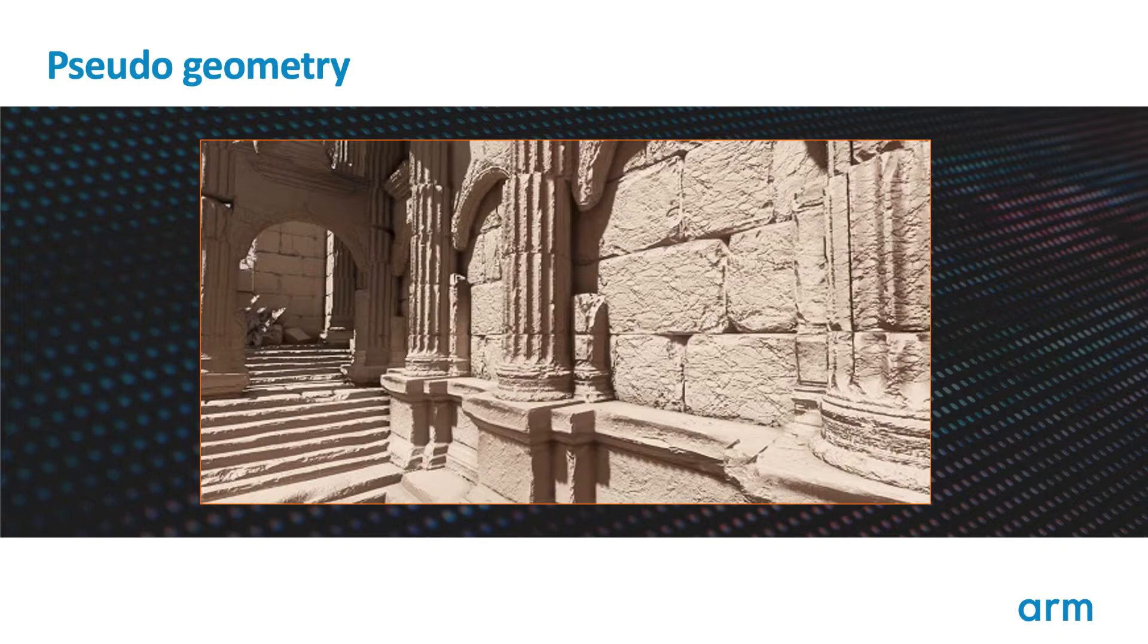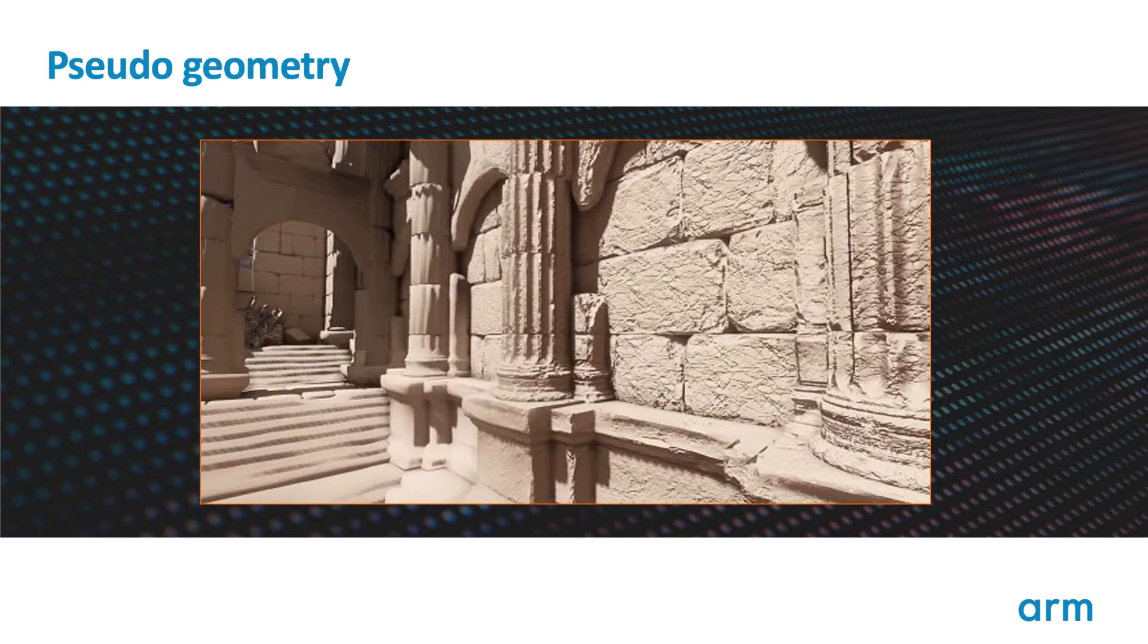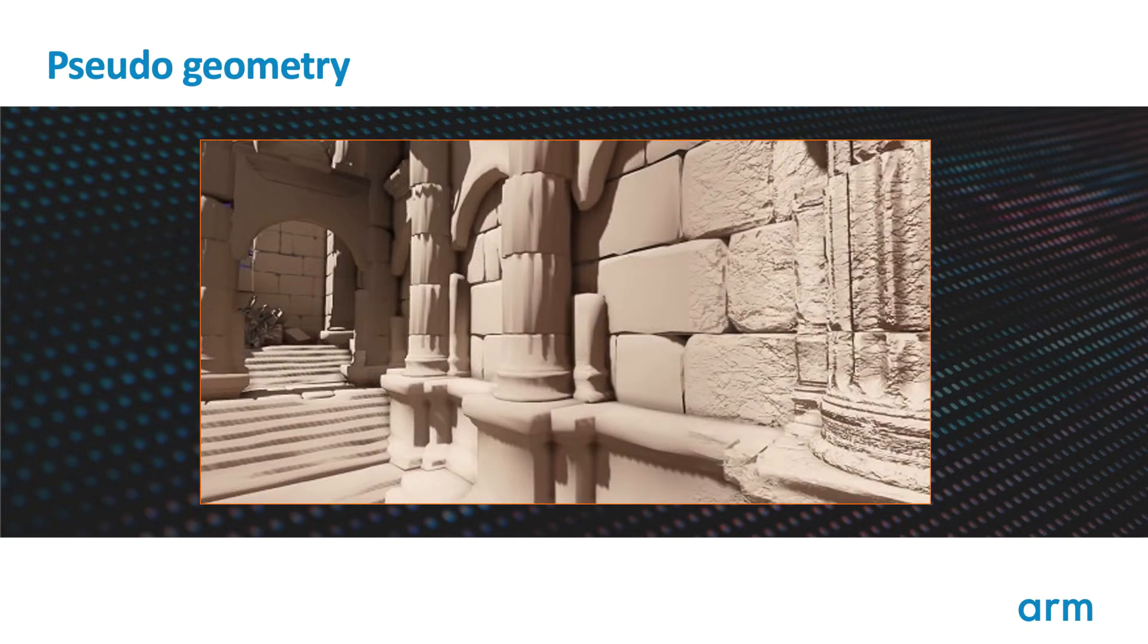One common mistake that beginners make is trying to model fine detail in-game using geometry. This is very expensive, requiring very dense triangle meshes, and can also suffer from aliasing artifacts due to the high density of triangle edges. To model complex surfaces and their interactions with light, it is recommended to use just enough triangles to preserve the silhouette edge of an object.